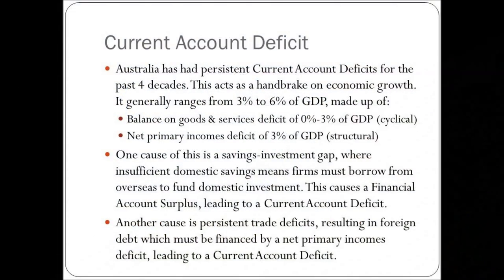Australia has had a persistent current account deficit for the past four decades, acting as a handbrake on economic growth. It generally ranges from 3% to 6% of GDP, made up of two components: the balance on goods and services — the trade balance — at 0-3% of GDP (cyclical), and net primary income deficit of 3% of GDP (structural, fairly consistent). One cause is the savings-investment gap: insufficient domestic savings means firms must borrow from overseas, causing a financial account surplus and, because the balance of payments must balance, a current account deficit. Persistent trade deficits also result in foreign debt financed by net primary income — generally interest — leading to a further current account deficit.